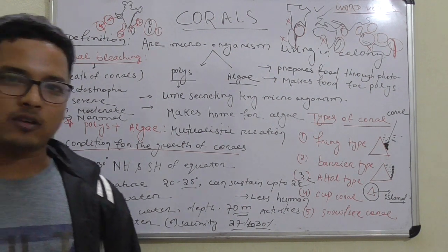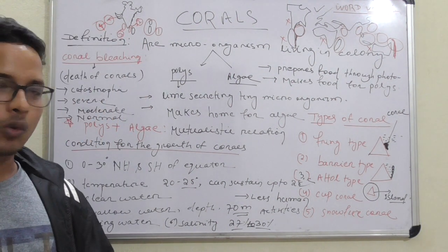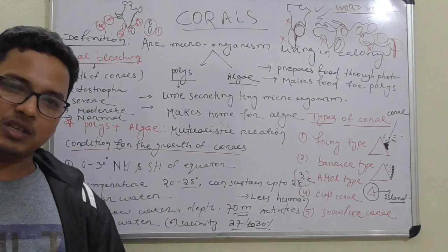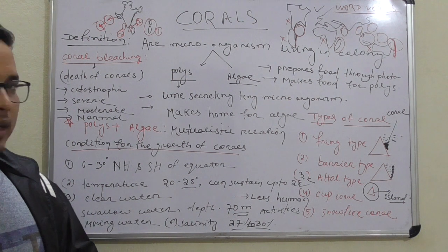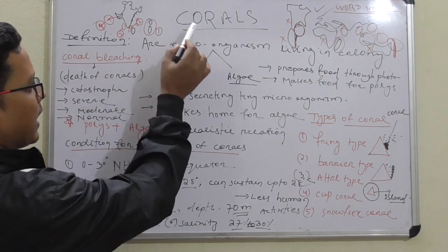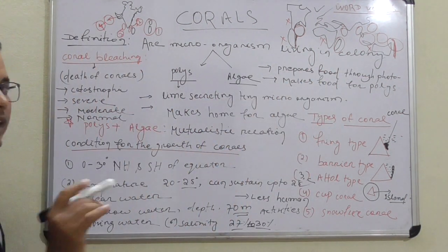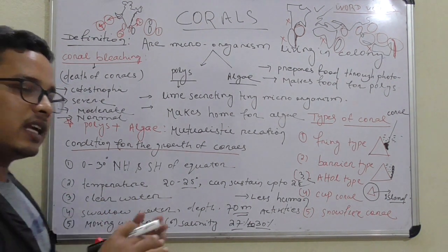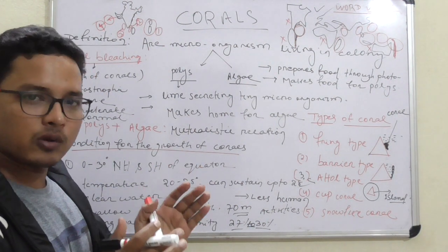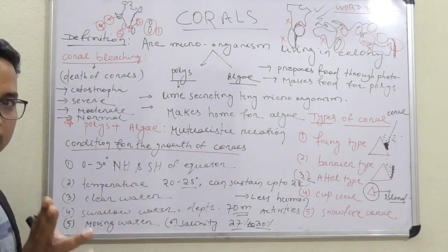Welcome back to Sankar Geography Classes. Today's topic is corals. All the points related to corals are mentioned on the whiteboard to save time and make it easy to understand. Corals are microorganisms living in colonies — millions and billions of microorganisms living together in water bodies like oceans, seas, bays, gulfs, etc.